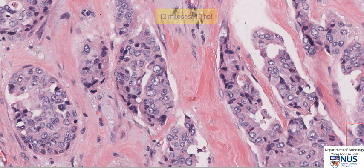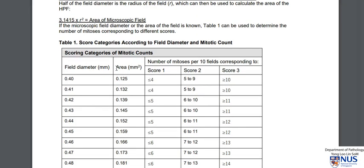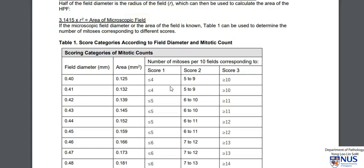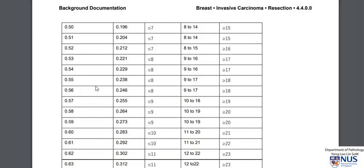How do we make sense of that number? This chart, provided by the College of American Pathologists Protocol for Pathology Reporting of Invasive Breast Carcinoma, gives specific mitotic number cutoffs for scores of 1, 2, and 3. The larger your field diameter, the higher these numbers are. My microscope field size is 0.56 millimeters, so with a mitotic count of 12 in 10 high power fields, we have a mitotic score of 2.